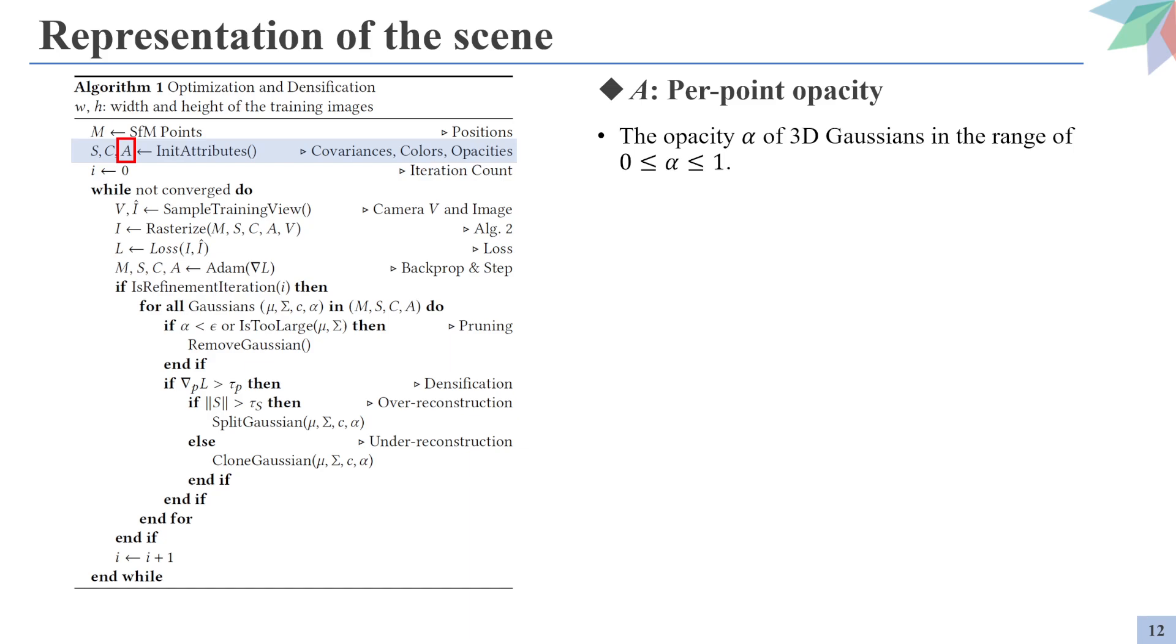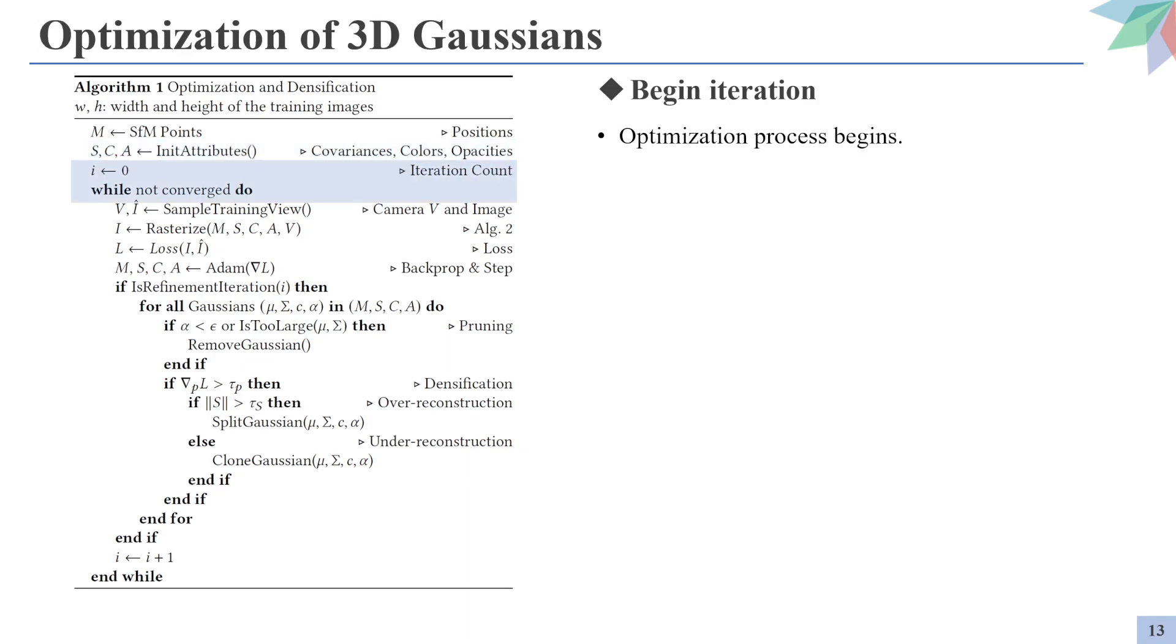The final value of A stands for the opacity of the Gaussians, which ranges from 0 to 1. The opacity value of 1 indicates that you won't be able to see anything through it. Now that we have all the attributes initialized, we can start the optimization process.